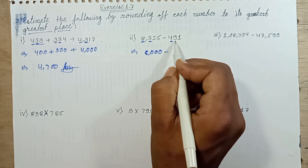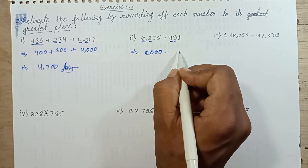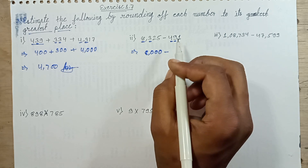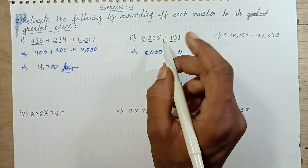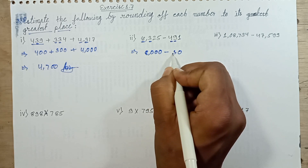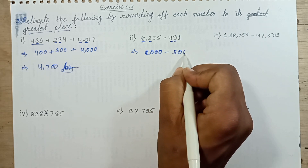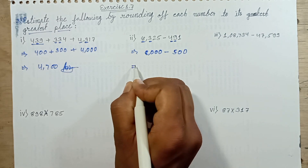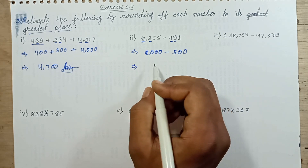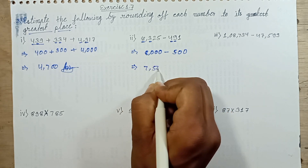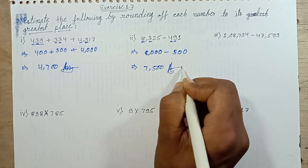Subtract this number. Greatest place is 4 digits. Tens place digit is 9 — 9 is greater than 5, so 9 is replaced with 0 and we increase the hundreds place by 1. 4 plus 1 is 5. Ones place digit is 1, replace with 0. Result comes out as 7,500. 7,500 is my answer.